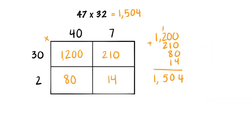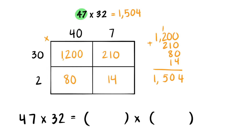Lastly, I want you to think of it like this. 47 times 32 equals, or is the same thing as, 40 plus 7 — which we know makes 47 — times 30 plus 2, which we know makes 32.